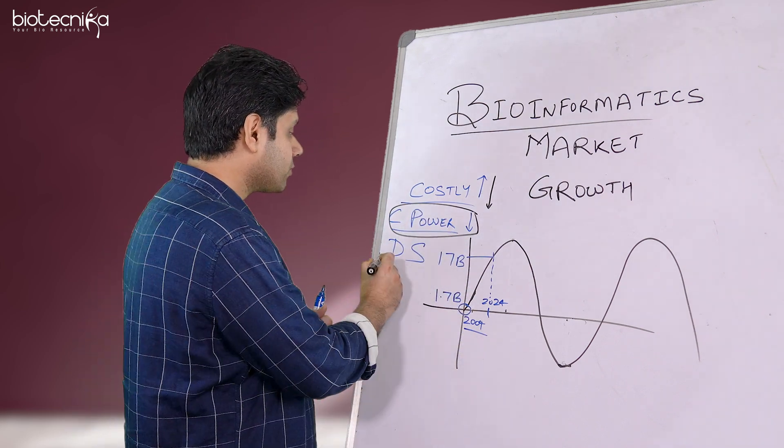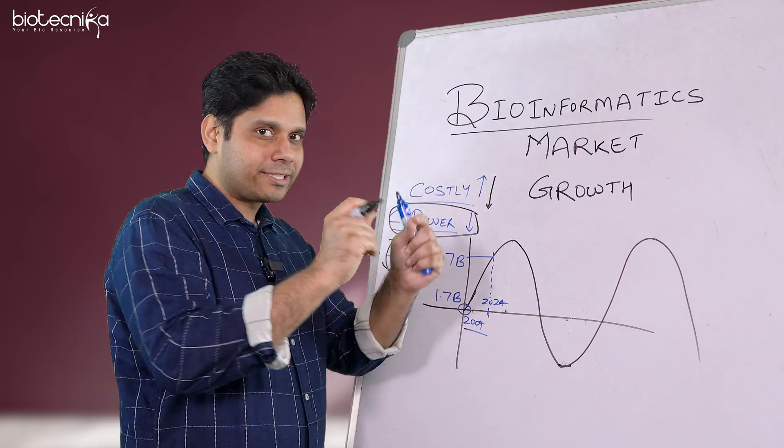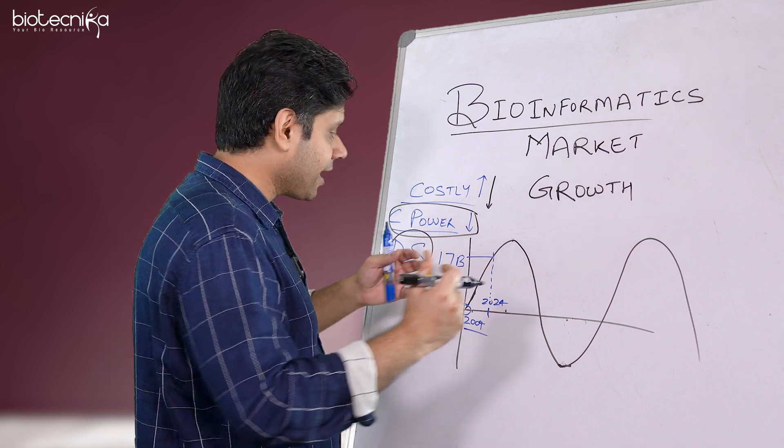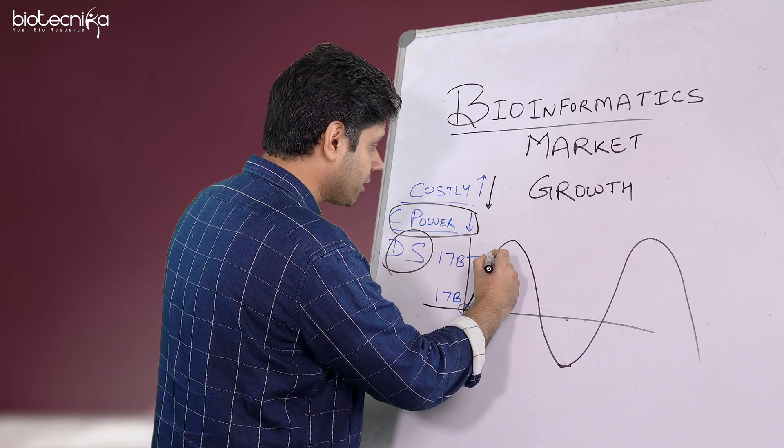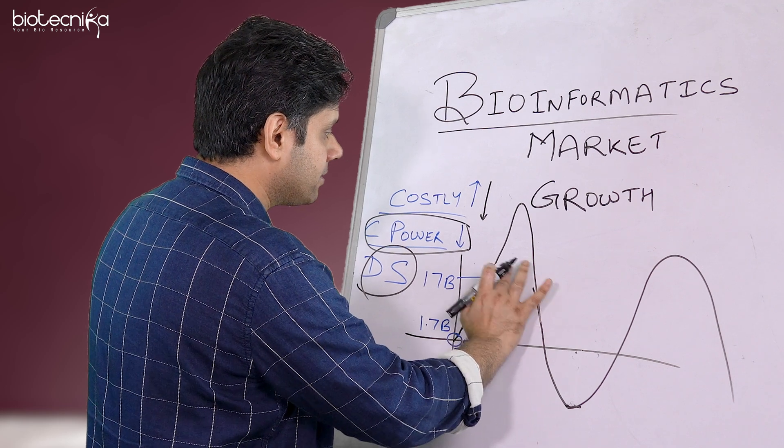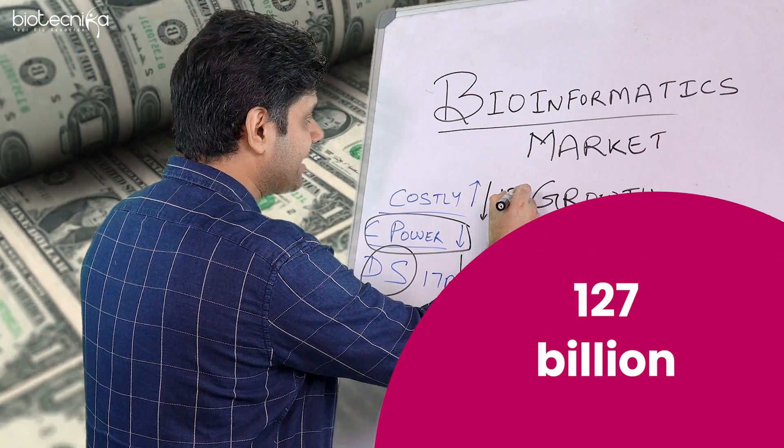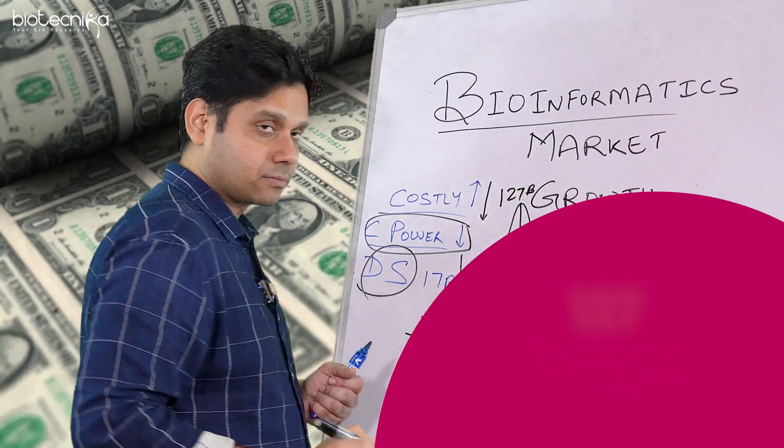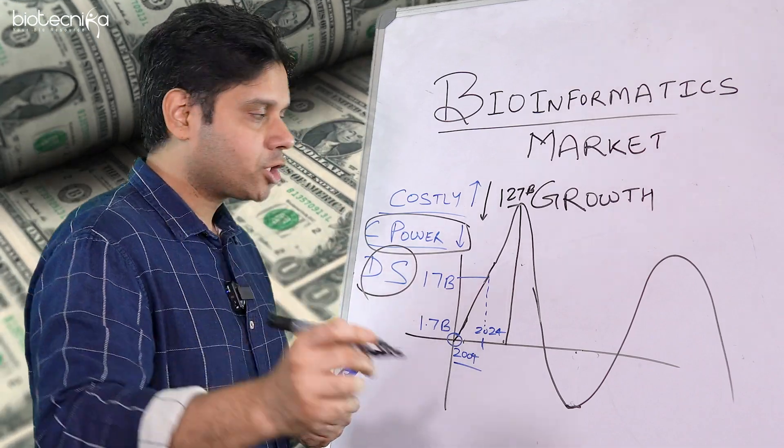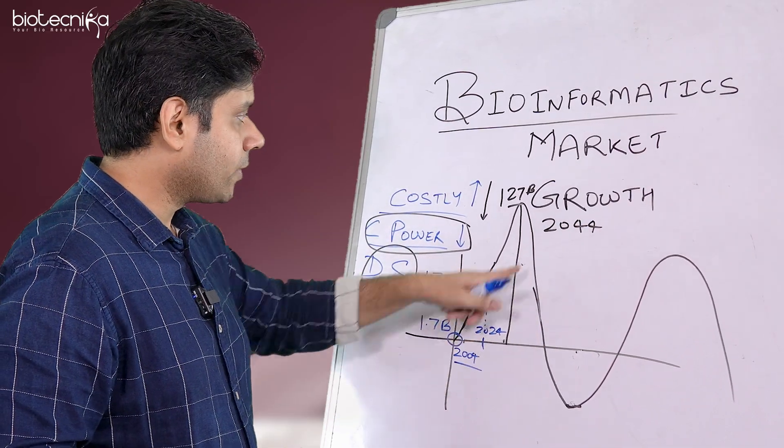Now that brings us to the next, do we still have the data storage capacity? Yes, we do have. So when all of the three dots are aligning in one single line, so it's like a magic. And that is why we are expecting now this will actually go even up here, and we will see the markets going to 127 billion, or more than that, by the time we will touch 2044.